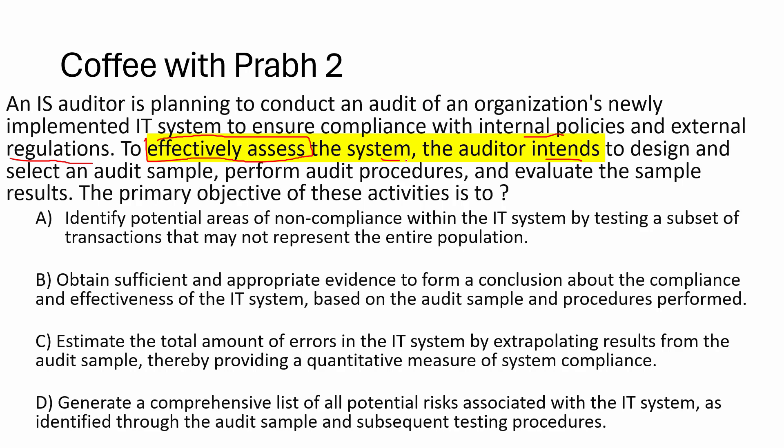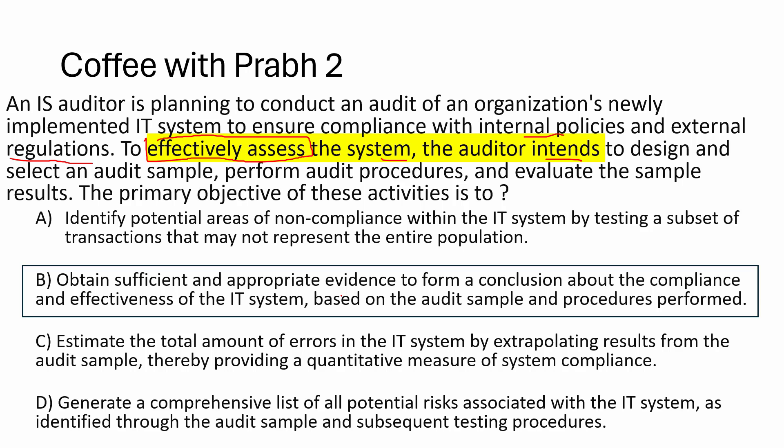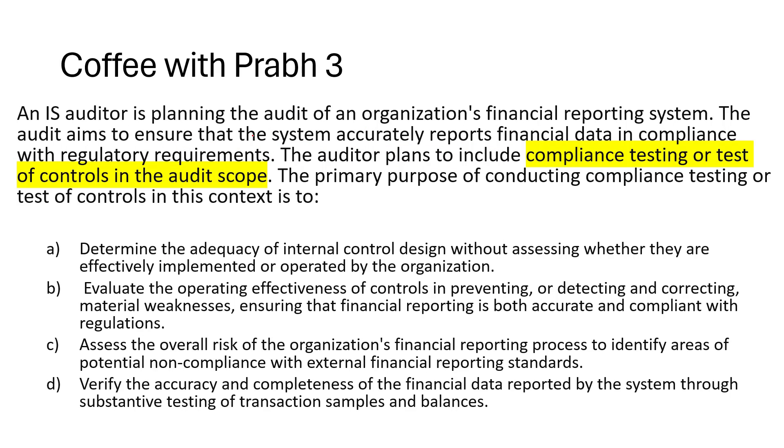Option A is eliminated because it misses other compliance areas. Option C is eliminated because estimating error alone cannot support a conclusion. We're left with B and D. Option D only generates a risk list, which is insufficient to take a call. The answer is B — obtain sufficient and appropriate evidence to form a conclusion about compliance and effectiveness. In CISA, when you are not clear with a sample you can extend it for better visibility.